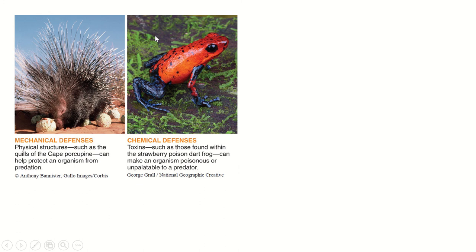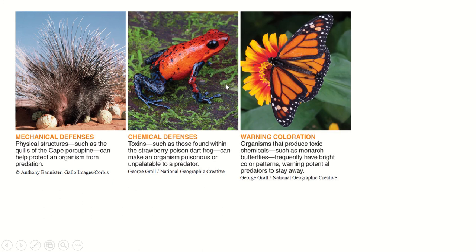Chemical defenses: this is a poison dart frog. People in the rainforests of Central America where these frogs live use blow darts to hunt, coating the tip of their darts in the toxin from this frog. It's a neurotoxin that paralyzes prey, making humans more effective hunters when they shoot those poisoned blow darts.